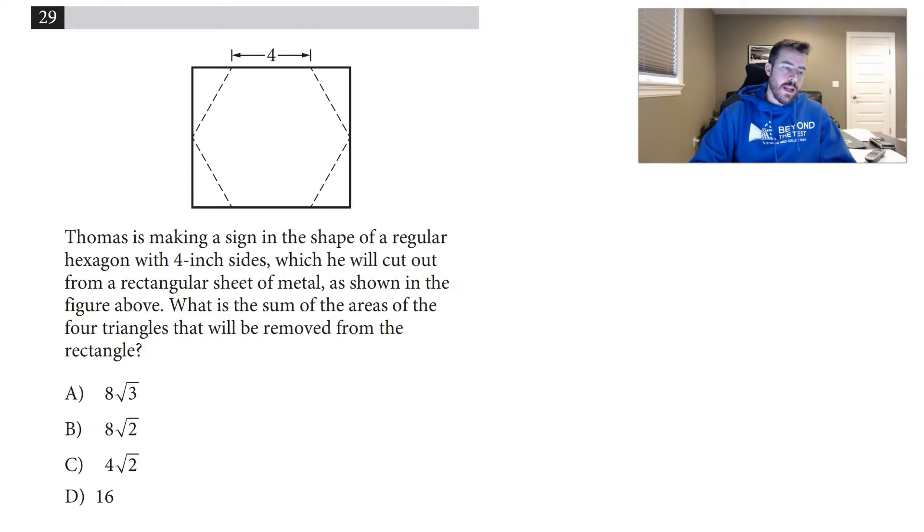Starting with number 29, it says Thomas is making a sign in the shape of a regular hexagon with 4-inch sides. He will cut it out from a rectangular sheet of metal as shown in the figure above. What is the sum of the areas of the four triangles that will be removed from the rectangle?